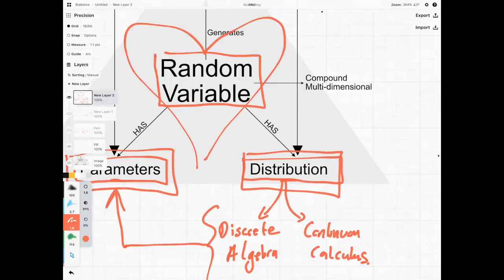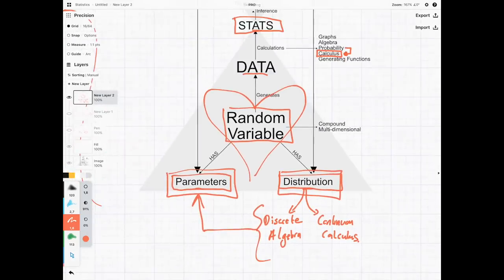So this is a critical, critical chapter. And it is very, very important that you become comfortable with this concept known as the random variable.